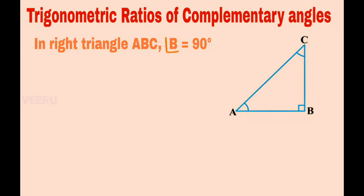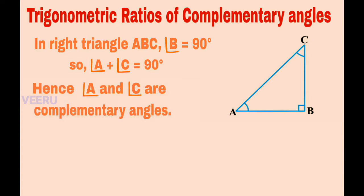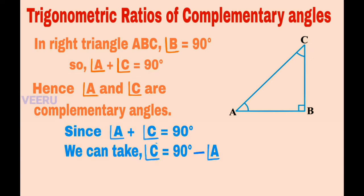In right triangle ABC, angle B is equal to 90 degrees. So the sum of the remaining angles, that is angle A plus angle C, is equal to 90 degrees. If the sum of two angles is 90 degrees, we call them complementary angles. Hence angle A and angle C are complementary angles. Since angle A plus angle C equals 90 degrees, we can take angle C equal to 90 degrees minus angle A.